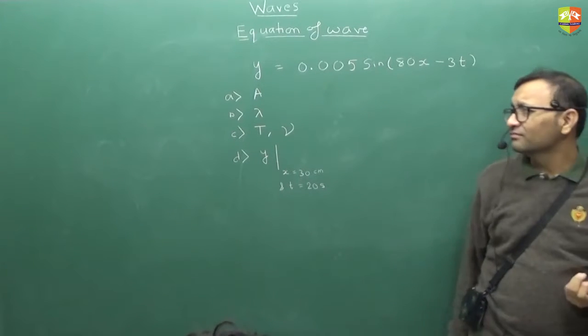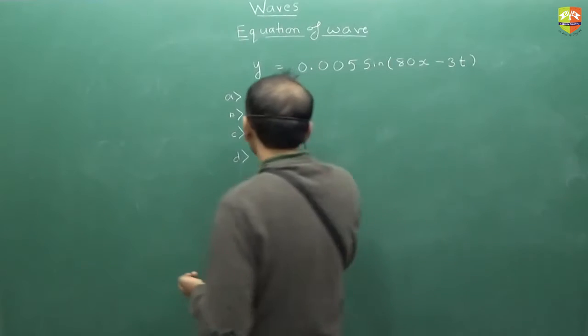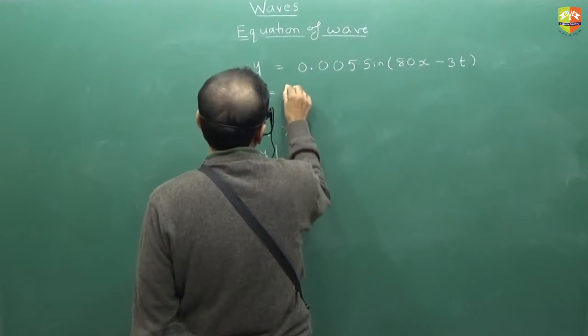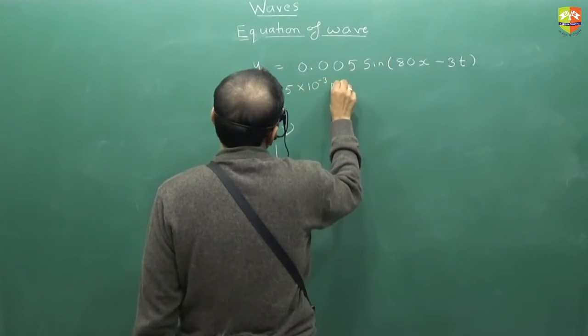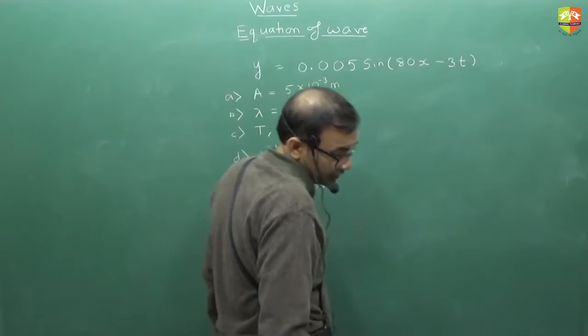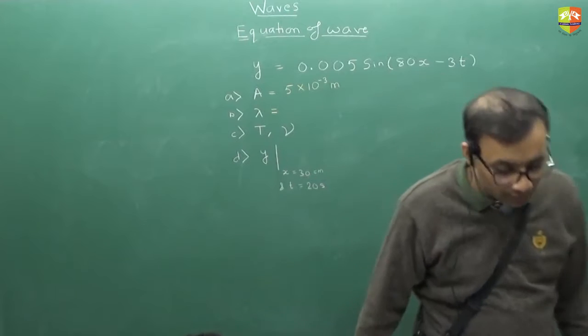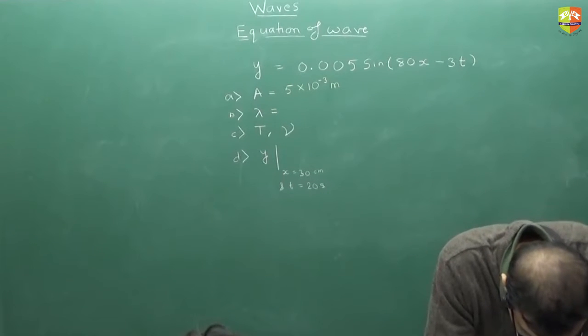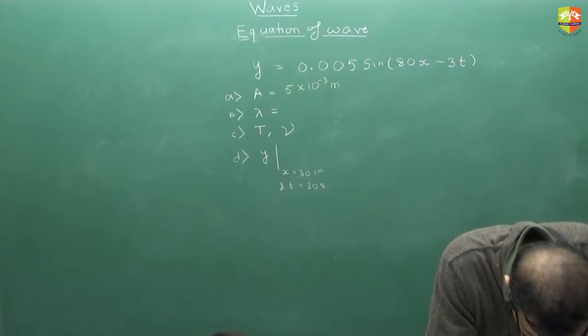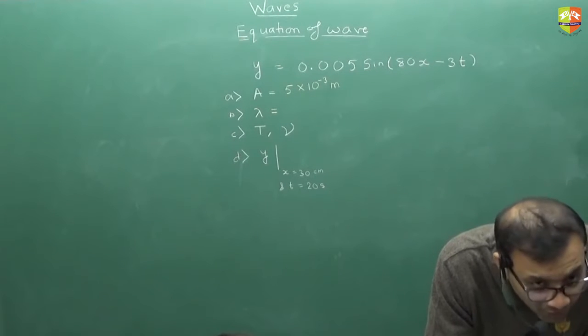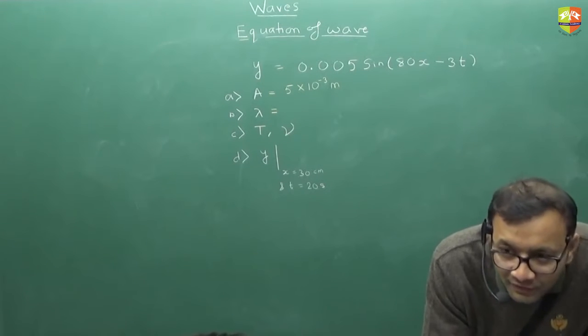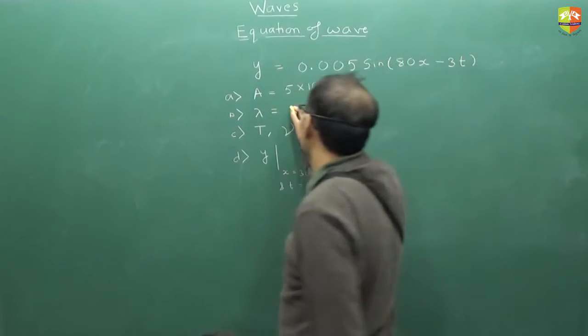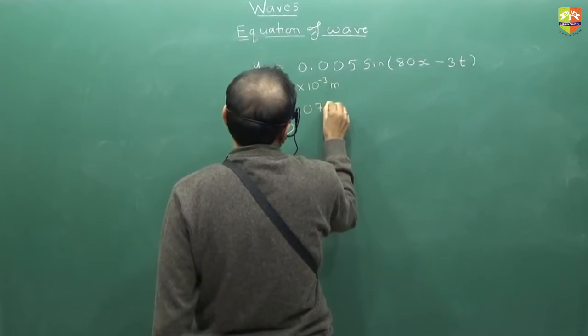Amplitude straightforward, 0.005 meters. Wavelength. Wavelength is how much? Pi by 40. Pi by 40, which is how much? 0.078 meters.